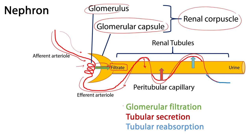There are two additional processes beyond glomerular filtration. First, tubular secretion — a second chance for moving materials from the peritubular capillaries into the filtrate. Anything that didn't pass through during glomerular filtration can be passed into the filtrate via tubular secretion. Second, tubular reabsorption — pulling materials out of the filtrate that we want to retain within the cardiovascular system. Water, for example, enters the filtrate in large quantities and is reclaimed through tubular reabsorption.